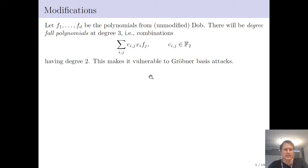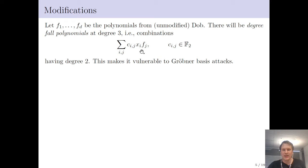These degree-fall polynomials at degree three are combinations where we take our quadratic public key polynomials, multiply with certain linear forms, and you would a priori expect this to be of degree three. However, this is actually of degree two. This makes it much more vulnerable to Gröbner basis attacks, which is essentially how an attacker is able to solve the system.